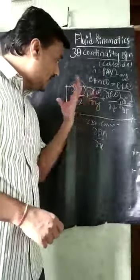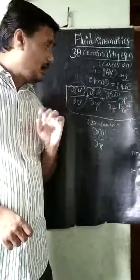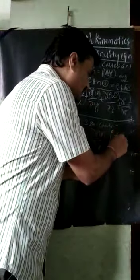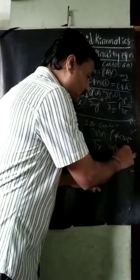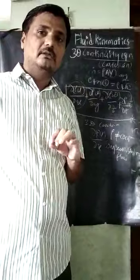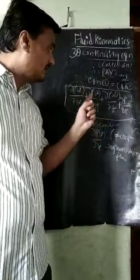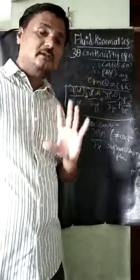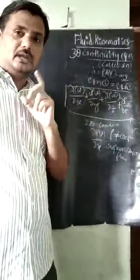So therefore, the equation we have derived is three-dimensional, and because density is not constant — we are differentiating density — this is the equation for compressible flow. Density is varying because it is being differentiated with respect to the space coordinates x, y, z, and also with respect to time. That is why this is the equation for 3D compressible flow.